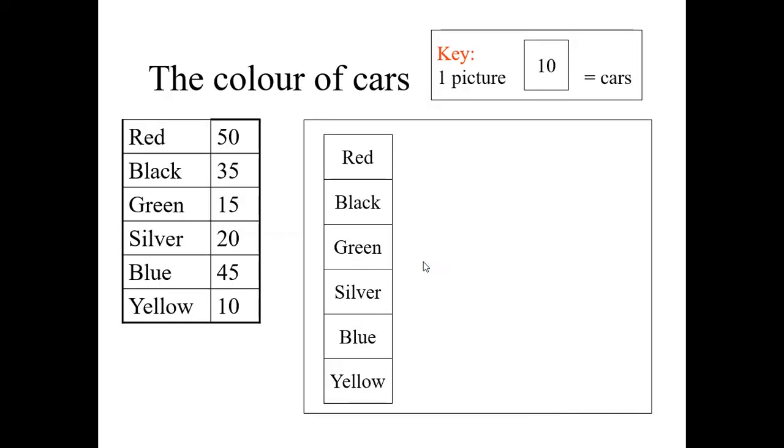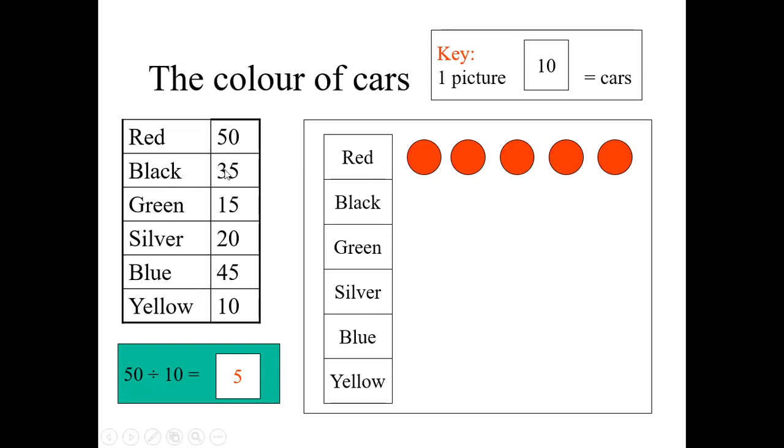Now, how many red color cars are here? 50. Each figure, how many? 10 cars. Then, how many red color cars we have to draw here? We need to divide this. 50 by 10. How much? 5. Now, we should draw 5 red color circles or you can draw cars or any picture. So, 5 pictures indicate 5 into 10, 50 cars. Black, how many are given here? 35. Then, how many black pictures we have to draw? Let us divide by 10. 35 by 10 is 3.5 or 3 and a half. Let us draw black, 3 and a half.